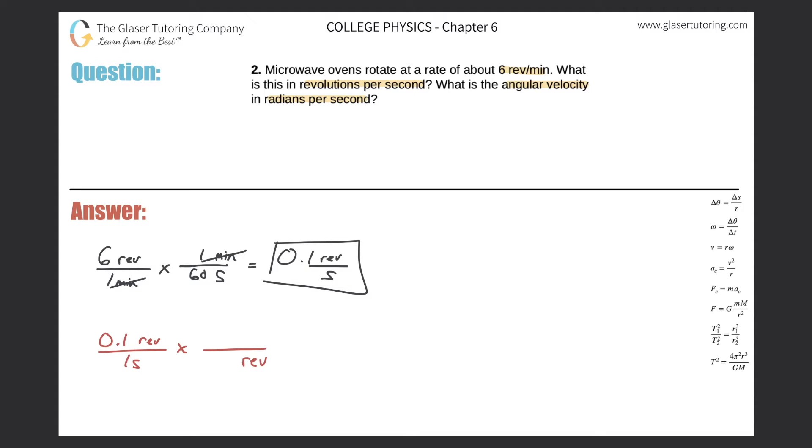Remember, the whole pattern here is whatever unit you want to get rid of—for example, in this case it was revolutions—that unit will go on the opposite side of the fraction in your conversion factor, in the denominator. And then you have to think, well, can I go right to radians? Meaning, do I know a relationship between revolutions and radians?